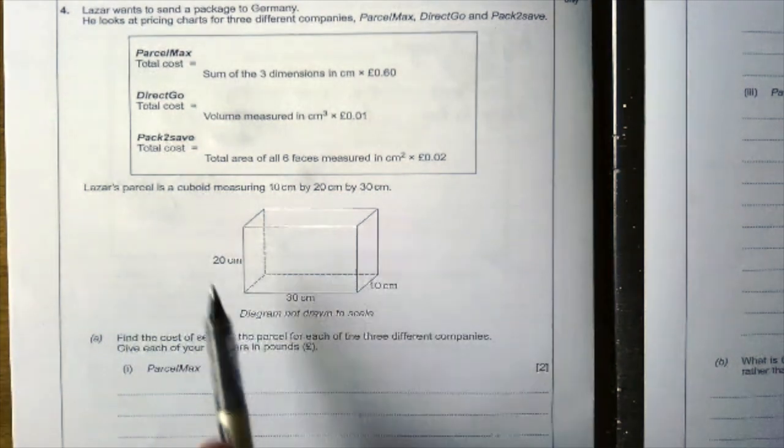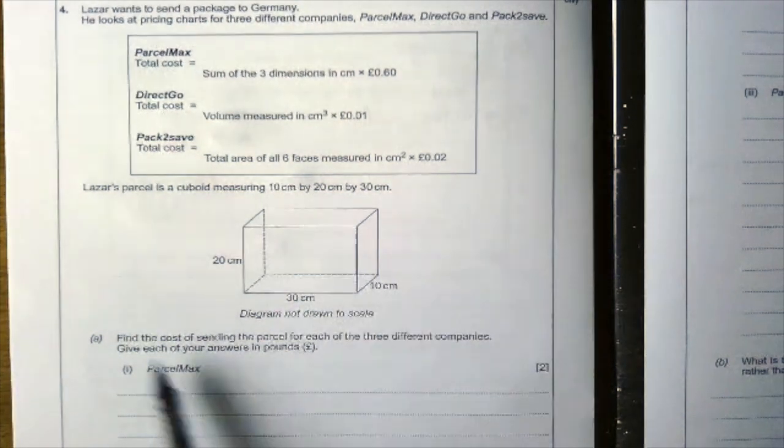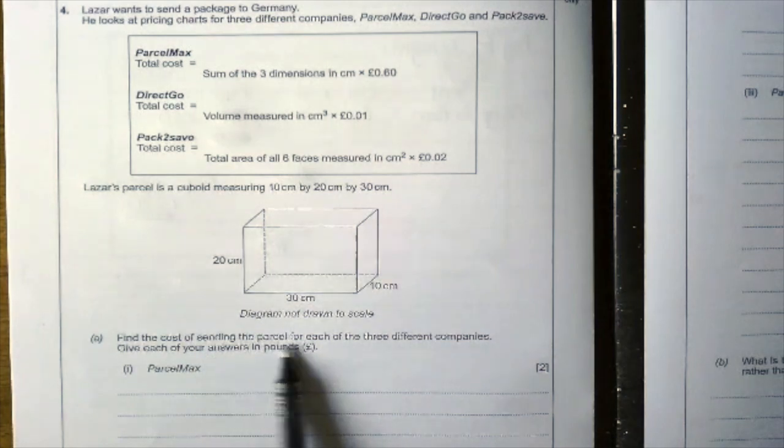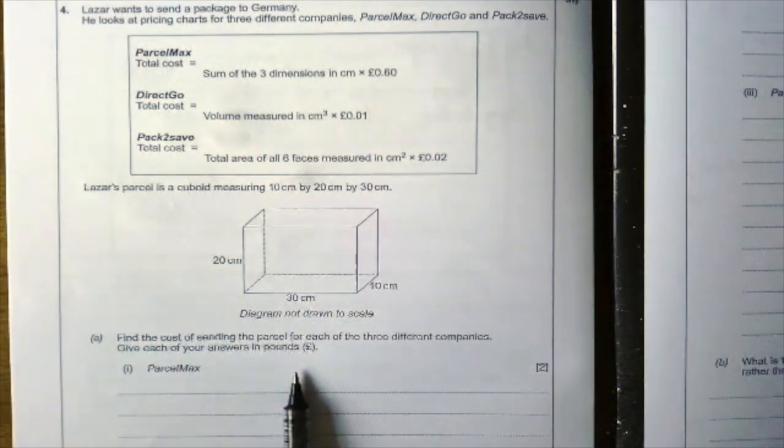This is his parcel measuring 20 by 30 by 10 and it wants you to find the cost of sending the parcel for each of the three different companies, giving your answers in pounds.